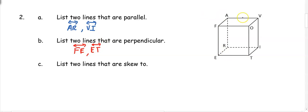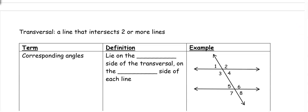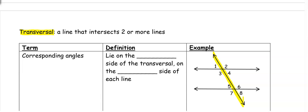For skew lines in the rectangular prism, they're on different parts of the shape going in different directions. We could have AR going up and down and VO going front and back. Now let's look at angles formed using a transversal. A transversal is a line that intersects two or more lines. In this first picture, the middle line is the transversal because it intersects the two lines going left to right.